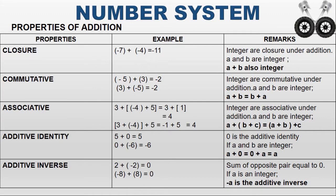For example, minus 7 plus minus 4. Here minus 7 is an integer and minus 4 is an integer. When I add these two integers, I get the answer minus 11. So minus 11 is also an integer. That means the closure property holds under addition.